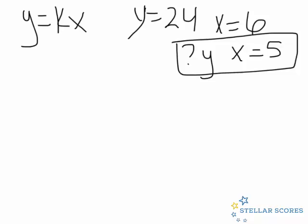This is the second problem in this section. It gives us the equation y equals kx, and it says when y equals 24 and x equals 6, it wants to know the value of y when x equals 5. This is a straightforward algebra substitution problem, so let's use the information they give us and plug it into the equation to solve for k.